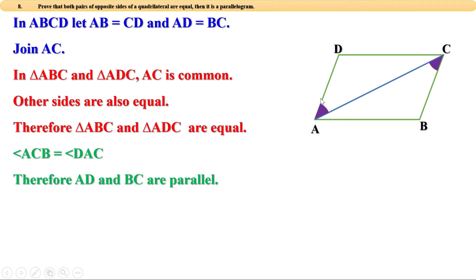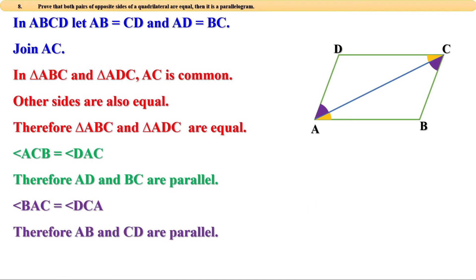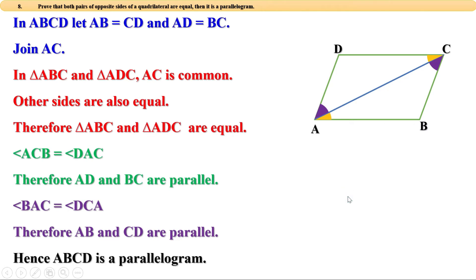They are equal, which means sides AD and BC are parallel. In the same way, since AD and BC are equal, the angles opposite to them are also equal. That means both pairs of opposite sides are parallel, and therefore ABCD is a parallelogram.